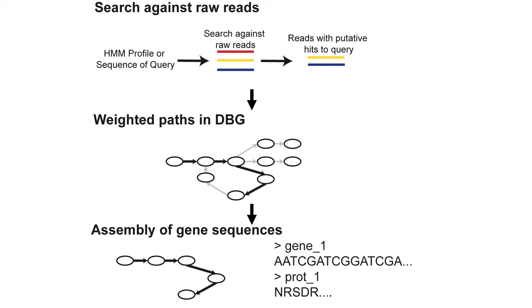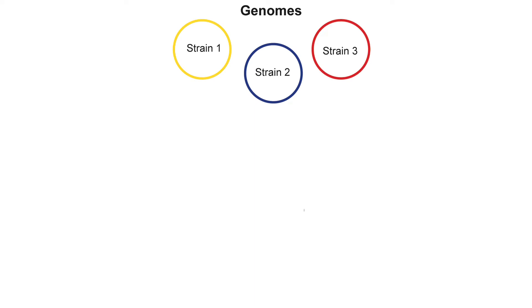Gene targeted assembly can be especially useful for the identification of marker genes, or the identification of genes of interest in a sample, without needing to assemble the entire set of reads first. This can alleviate some of the computational demands associated with assembly and allow for targeted analyses to be performed even when working with large data sets. Recent algorithmic advances in how de Bruijn graphs are constructed and represented in memory have led to their use with larger and more complex data sets.